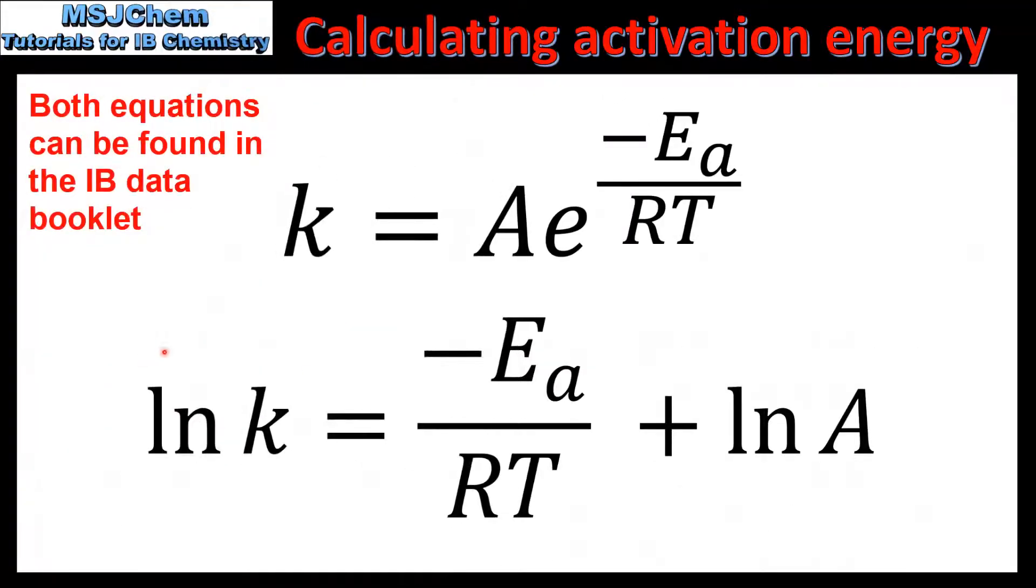The first method involves taking the natural log of both sides of the Arrhenius equation, which gives us ln K is equal to negative E_a over RT plus ln A.